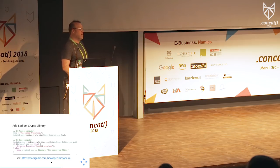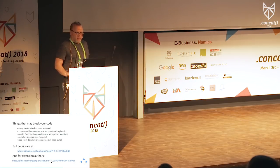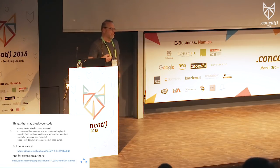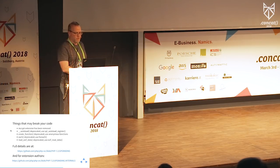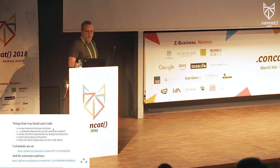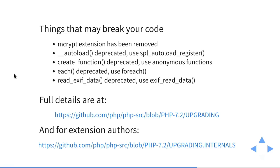Things that may break your code: we moved completely away from mcrypt, which already warned in PHP 7.1 as deprecated. It's now completely removed in 7.2. Most of your upgrade work going to PHP 7.2 is probably going to be mcrypt-related, along with a couple of other very old features that have been removed or will now spew warnings.